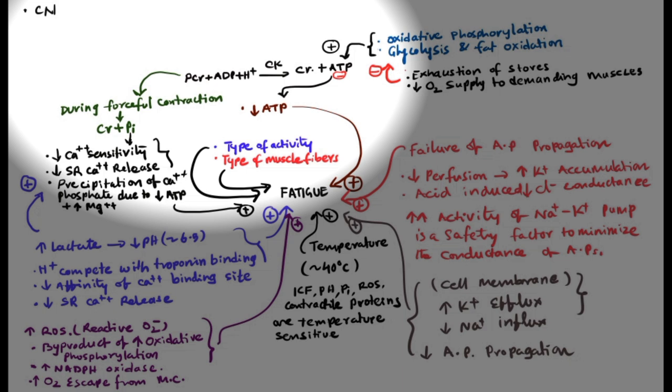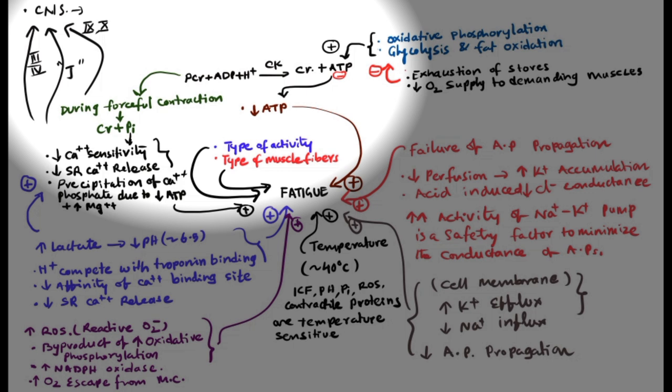Regarding CNS feedback of fatigue: information from the contractile elements reaches the central nervous system via type 3 and 4 sensory afferent fibers — the A-delta and C fibers. The lungs also send information to the central nervous system via J receptors during high activity. The glossopharyngeal and vagus nerves (9th and 10th cranial nerves) send information about chemical changes in the blood to the central nervous system. These serve as inputs to the CNS about high-intensity or fatigue-related activity.